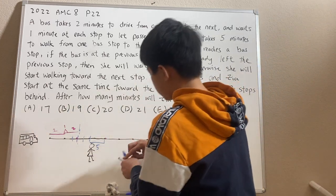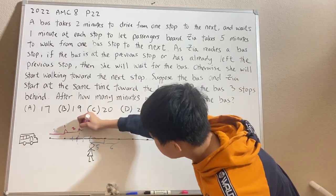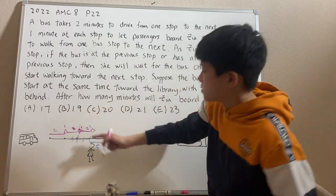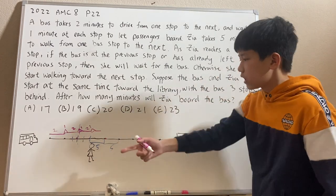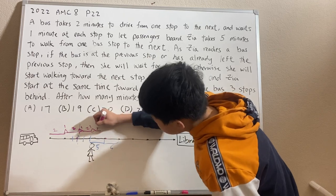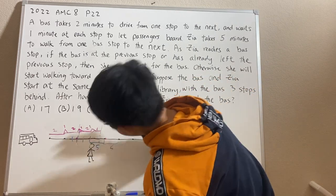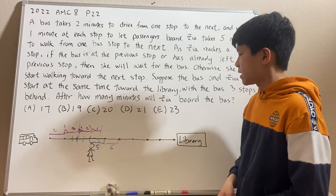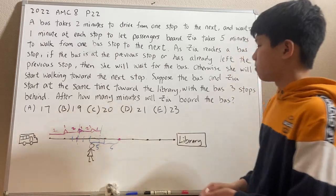Let's do the next five-minute interval. The bus waits one minute, then goes for two minutes, waits one minute again — that's four minutes already — then travels one more minute. But since it takes two minutes to go from one stop to the next, one minute only gets it halfway. So it won't be at the next stop yet. This is another five-minute unit. Again, Zia's position is right here and the bus's position is right here. It's still not satisfying the requirements since the bus is not at the previous stop nor has it already left. So we have to go again.